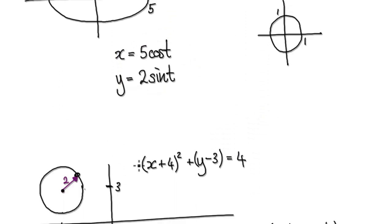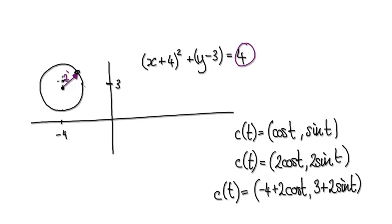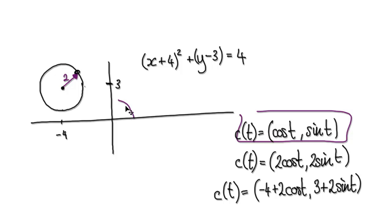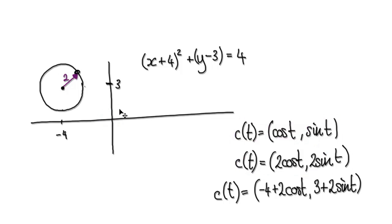Now if you have a circle translated across in the negative direction by 4 and up by 3, with a radius of 2, start out with your unit circle. We want a radius of 2, so stick a 2 in front of cos and a 2 in front of sine. That gives you a circle of radius 2.